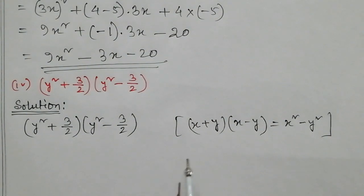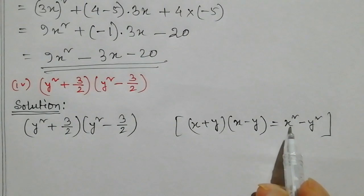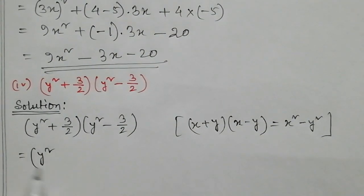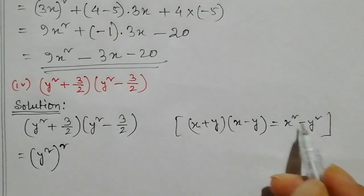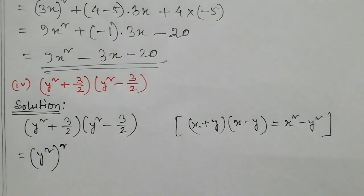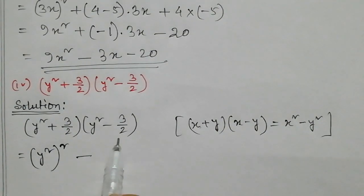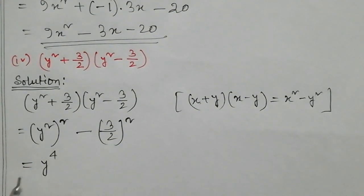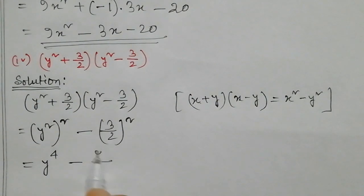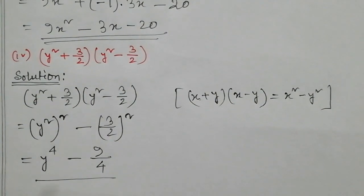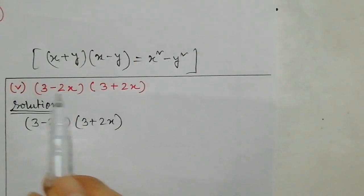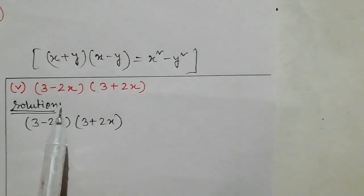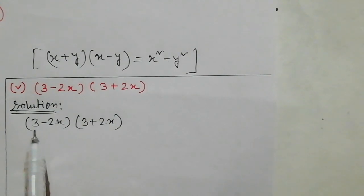x square minus y square equals x plus y whole into x minus y. Write that. So 3b squared — two terms come: first two and second two — plus and minus.